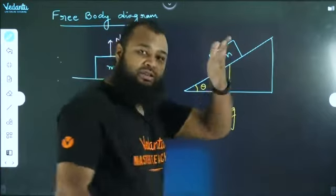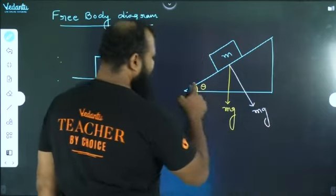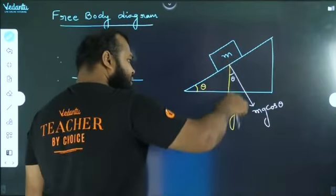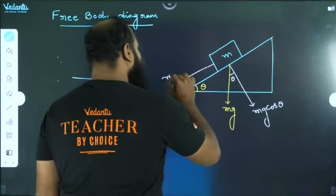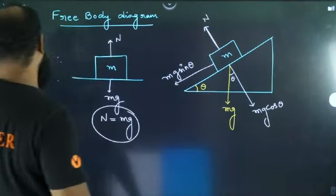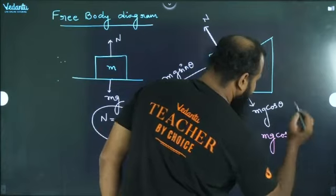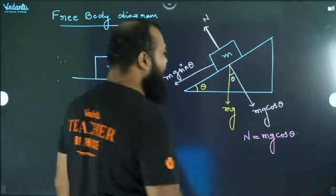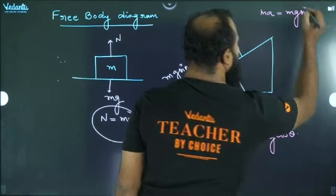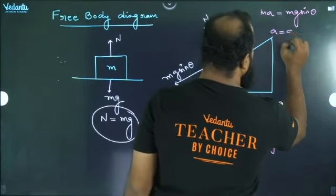In this case the surface is smooth. On the inclined plane, Mg has two components: Mg cos theta perpendicular to the surface, and Mg sin theta along the surface. The normal force on the inclined plane is Mg cos theta. Because of Mg sin theta it will slide down. Therefore the net force F is equal to MA, which gives Mg sin theta, and the acceleration A is equal to G sin theta.